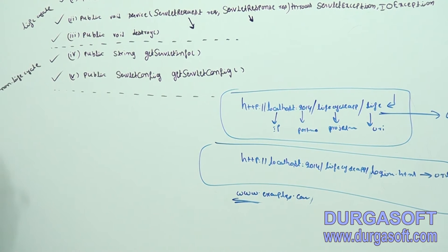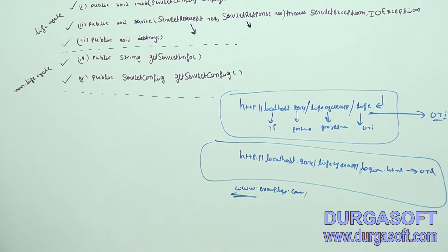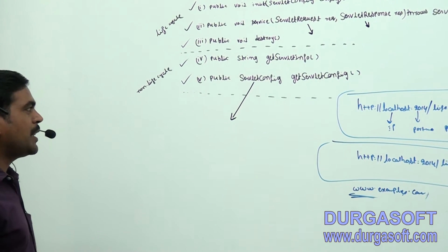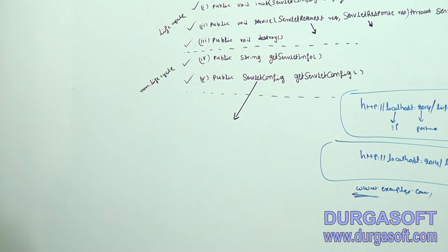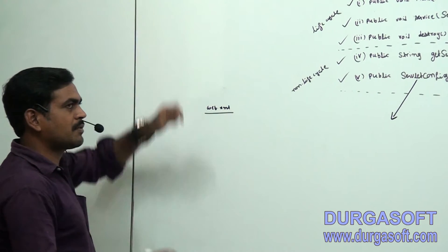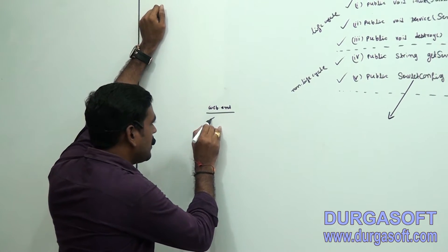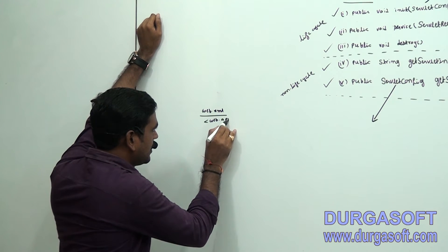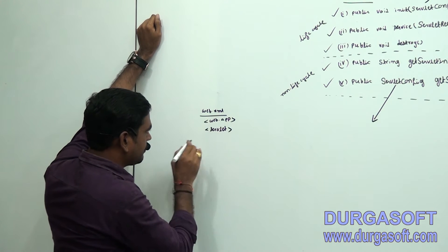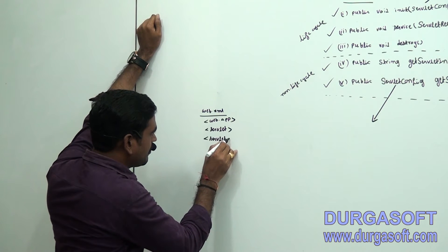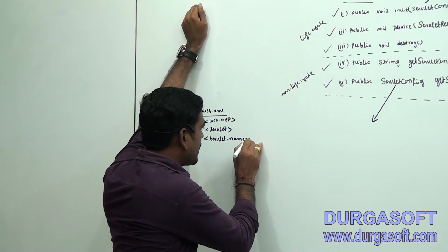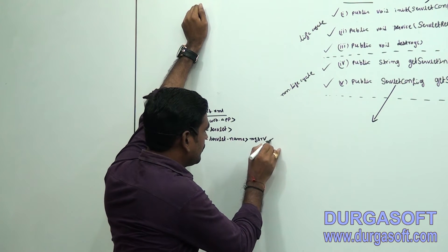Let us start with the session. What is the purpose of the getServletConfig object? Whenever we are developing a servlet, we need to configure it. How to configure? For example, in web.xml, inside the web.xml we can configure like this: web-app, under that servlet, servlet-name. We can pass, for example, 'my servlet', then close the servlet-name.